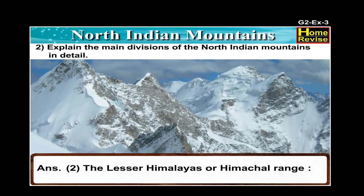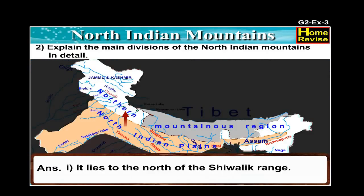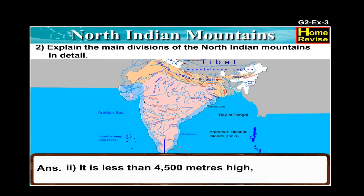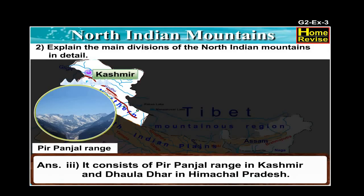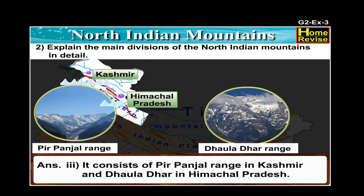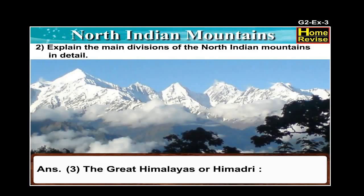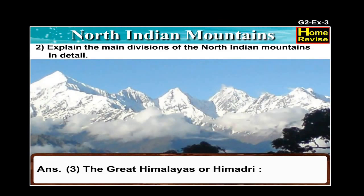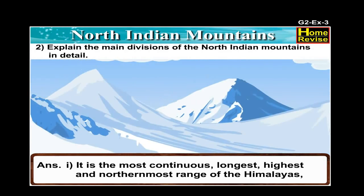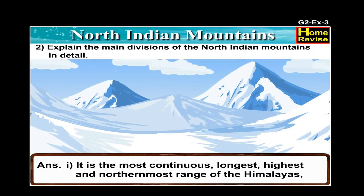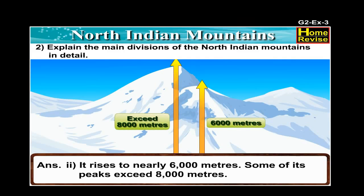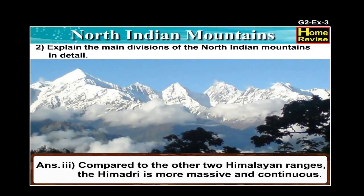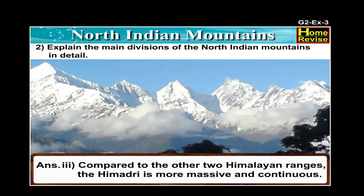The Lesser Himalayas or Himachal range lies to the north of the Shivalik range and is less than 4500 meters high. It consists of the Pirpanjal range in Kashmir and Dholadhar in Himachal Pradesh. The third is the Great Himalayas or Himadri — the most continuous, longest, highest and northernmost range of the Himalayas. It rises to nearly 6000 meters and some of its peaks exceed 8000 meters. Compared to the other two Himalayan ranges, the Himadri is more massive and continuous.